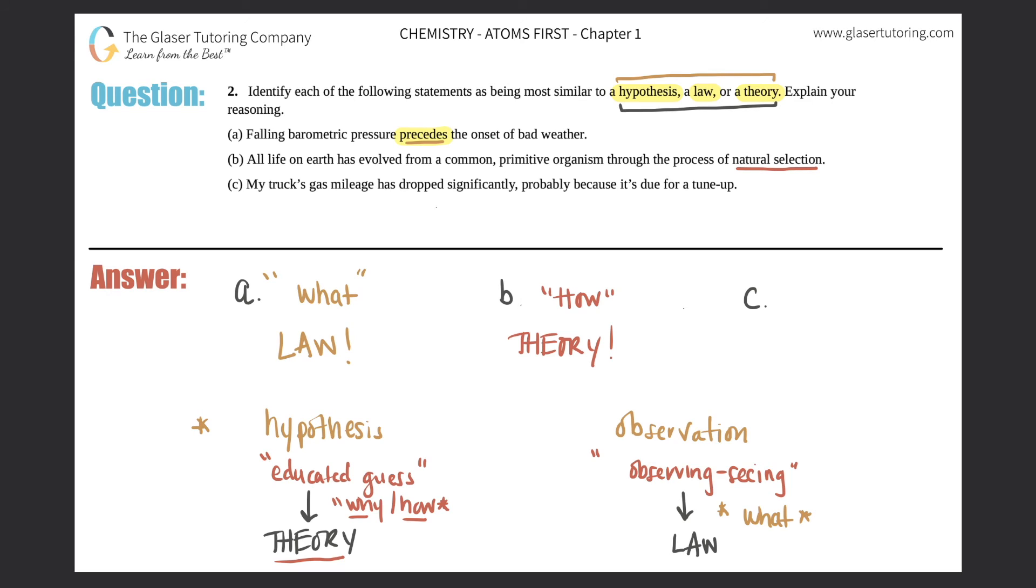Now for c, it says 'My truck's gas mileage has dropped significantly, probably because it's due for a tune-up.' This is a guess. Probably, maybe—we're all guessing here. And since this is a guess, it's a good guess, it's an educated guess, therefore this would be a hypothesis.